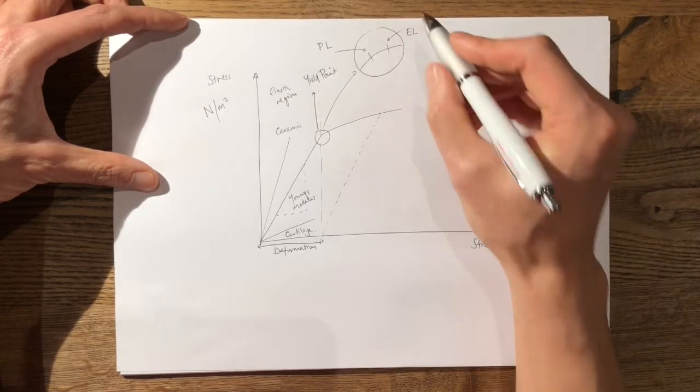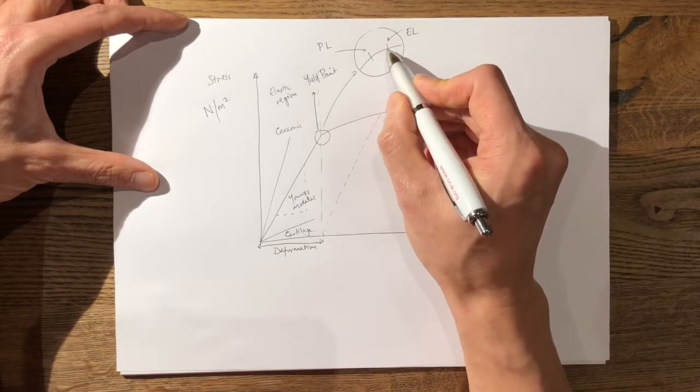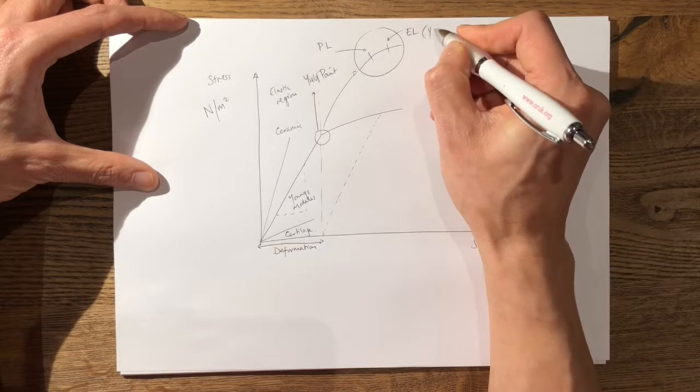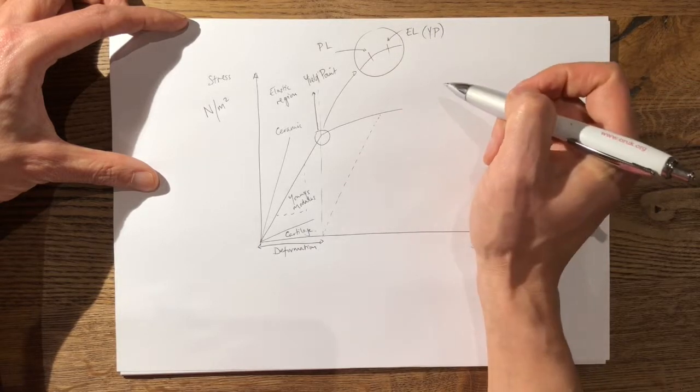Now the elastic limit is where the curve transitions from the elastic region to the plastic region and therefore we know this as the yield point, which is pretty much the same thing.